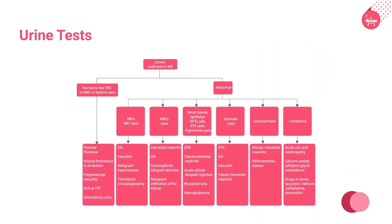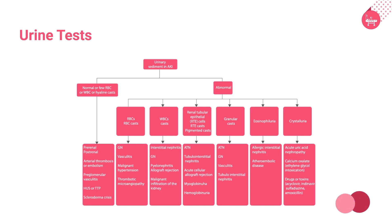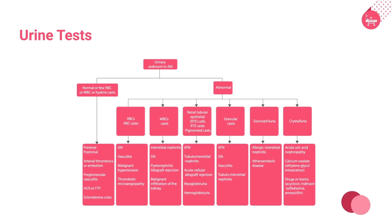Urine tests: The measurements of urine osmolality, electrolytes, and creatinine concentration are simple and useful in differentiating between ATN and pre-renal azotemia. Urine specific gravity can be measured; a high urine specific gravity generally correlates with concentrated urine and is expected in pre-renal azotemia. Dipstick tests determine whether the urine contains protein or heme pigments.